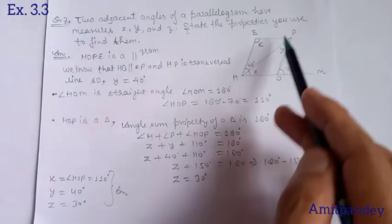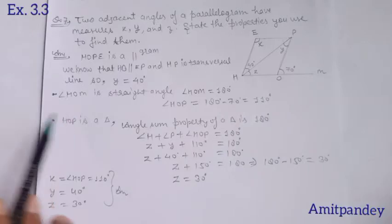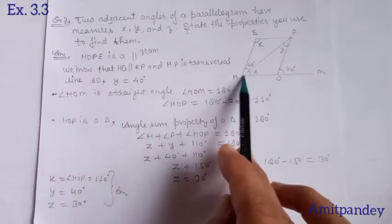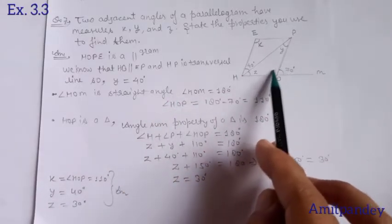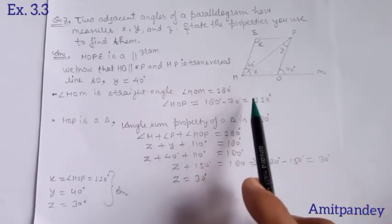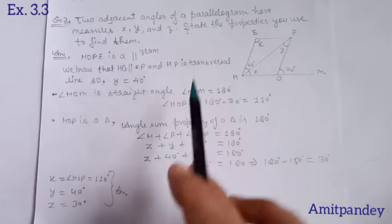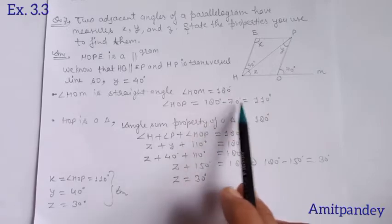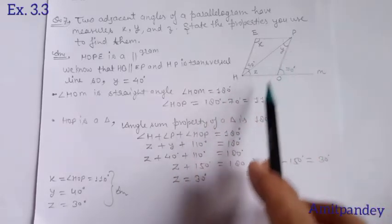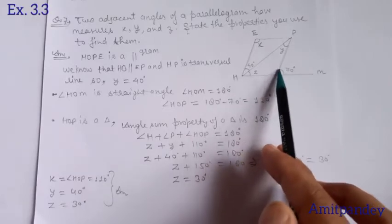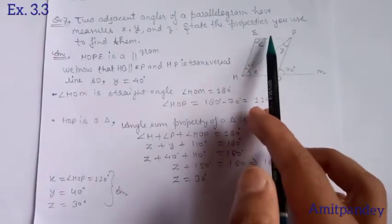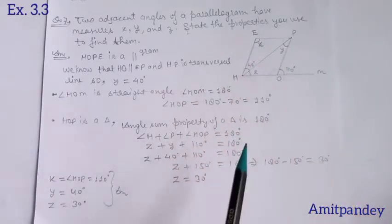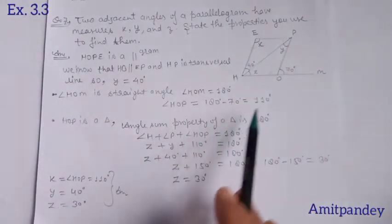This angle is also Z — both are Z angles. We obtain Y equals 40°. HOM is a straight angle, a straight line of 180°. This angle and this angle are a linear pair, and their sum is 180°. To find HOP, we subtract this angle from 180°: 180 minus 70 equals 110°. So HOP is 110°. And you know this angle is opposite to HOP, so X equals 110° because opposite angles of a parallelogram are equal.